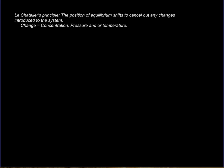If you introduce a change to a system at equilibrium, it will shift to the other side to cancel the change. This was the contribution of a French chemist known as Le Chatelier, and the principle is attributed to him. The changes are either concentration, pressure, and/or temperature.